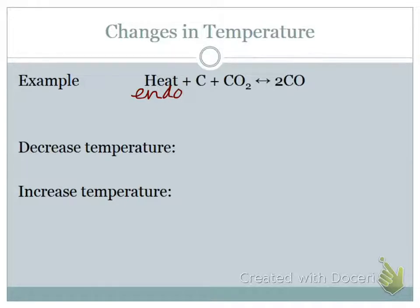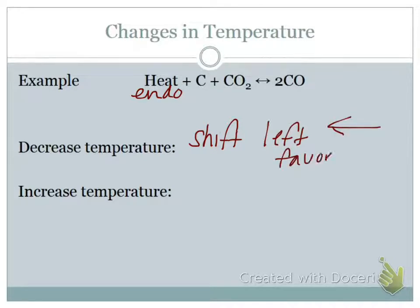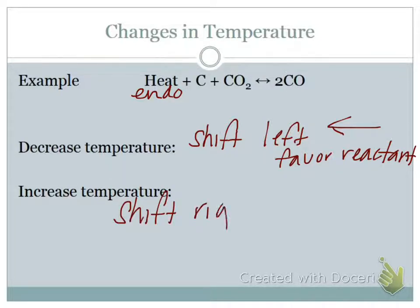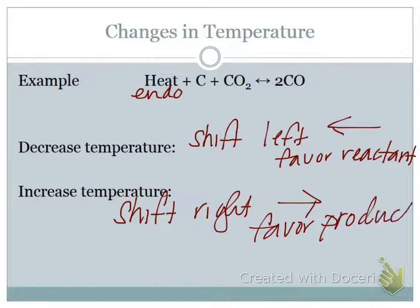In this example, we have an endothermic reaction because heat is a reactant. So if I were to decrease the temperature, it would shift left toward the reactants, and the equilibrium would favor the reactants. If I increase the temperature in that endothermic reaction, it would shift right and favor the products. Now for an exothermic example: A + B → C + heat. If I increase temperature, it will shift away from it — shift left, favoring reactants. If I decrease temperature, it would shift right and favor the products.